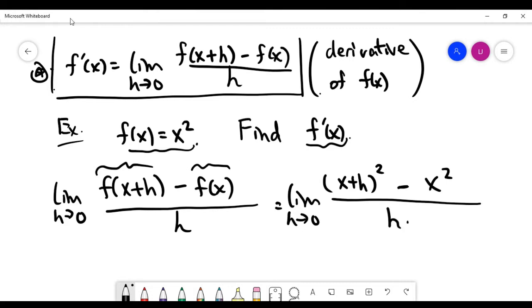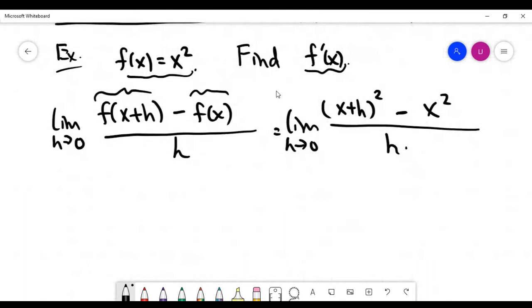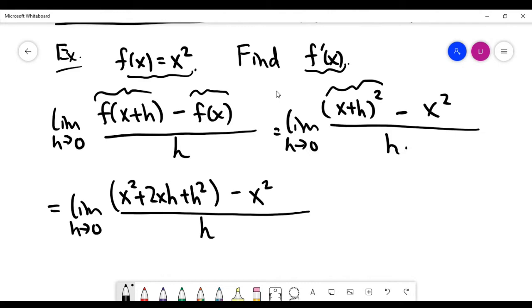It is your job by the use of your knowledge in high school algebra to find the limit. Let's try to do it together. This limit is the same as, by expanding what you have in the numerator side, we expand this bracket x plus h times x plus h. So it's going to be x squared plus 2xh plus h squared.